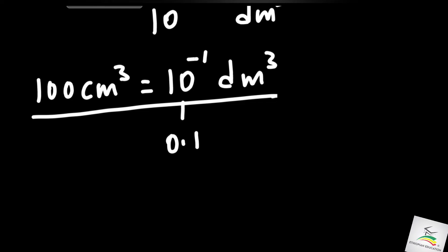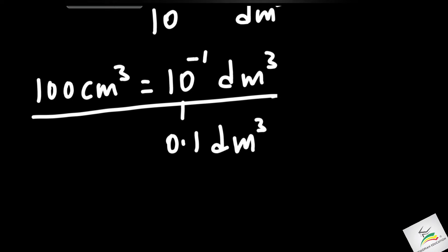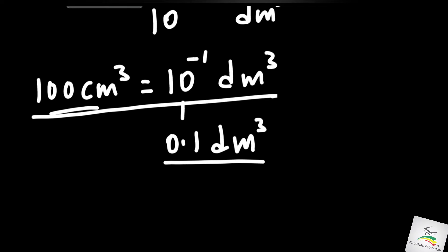So 100 centimeter cubed equals ten to the power of minus one decimeter cubed, which is 0.1 dm³.